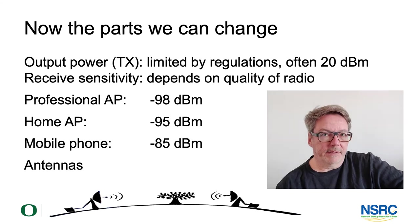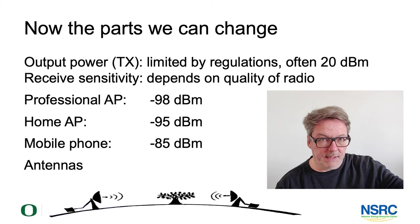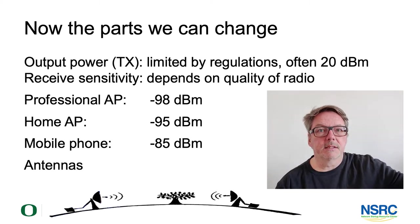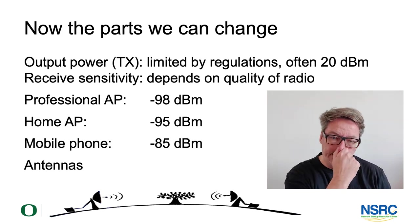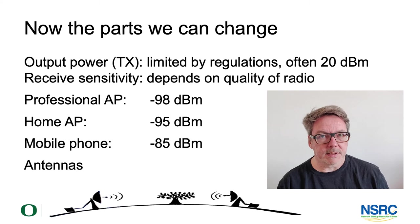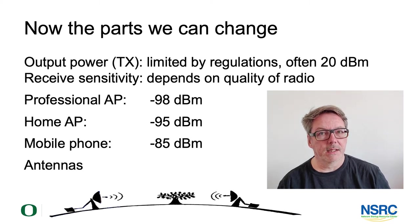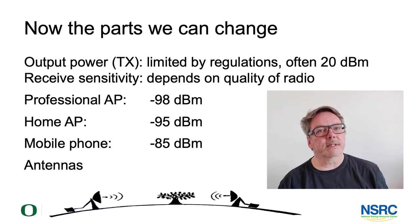The parts we can change in a link budget: first, the output power — what the radio outputs and brings into the antenna on the sending side. Typical values for Wi-Fi are 20 dBm, or 100 milliwatt. This is largely due to regulations on ISM bands, which set maximum power limits, and in most places for Wi-Fi that would be 20 dBm.